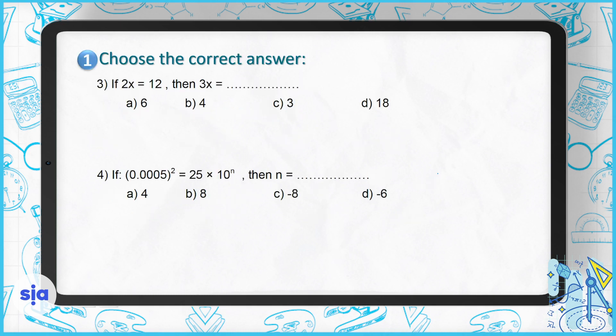Question 3: if 2x equals 12, what is 3x? If you divide both sides by 2, then x equals 6. Take care — the question is asking you to find 3x, not x. So 3x is 3 multiplied by 6, which equals 18.